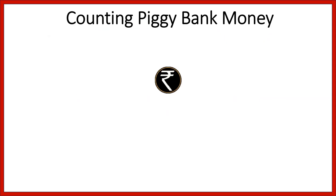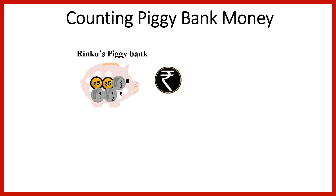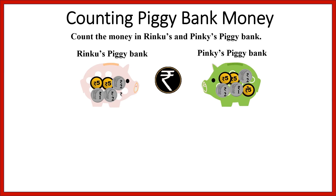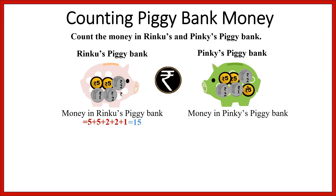Next is counting piggy bank money. Here you have one piggy bank which belongs to Rinku and another which belongs to Pinky. Count the money in each. Money in Rinku's piggy bank: 5 plus 5 plus 2 plus 2 plus 2 plus 1 equals 17. In Pinky's: 5 plus 5 plus 2 plus 2 plus 1 plus 5 equals 20. Now who has more money? Pinky has more money.